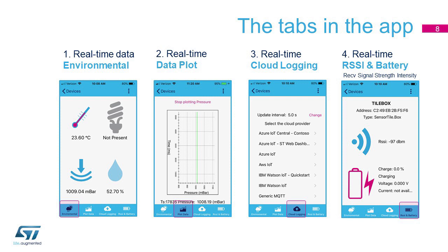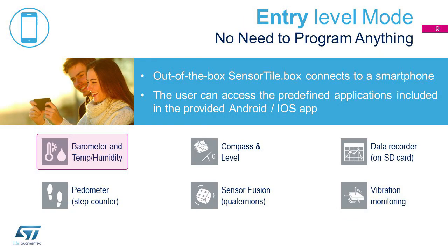These buttons can be used to access different screens. The first two have already been shown. The next one, cloud logging, will be explained in the next video. And the last one shows some useful information about the signal strength of the Bluetooth connection, RSSI, and the status of SensorTile.Box battery. So we've just checked out the barometer example.